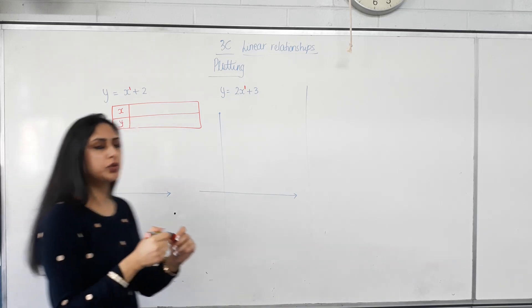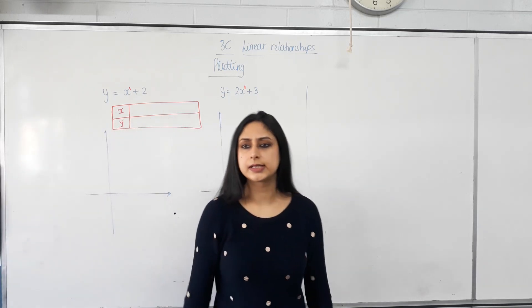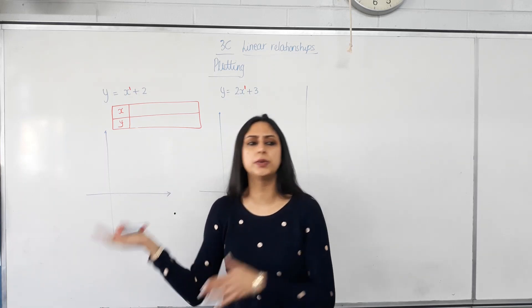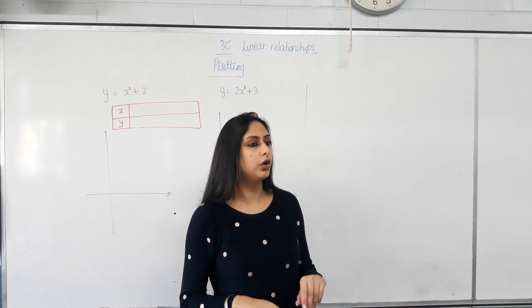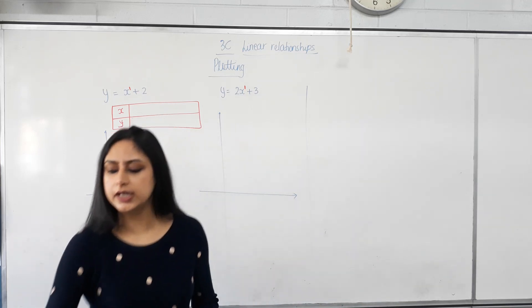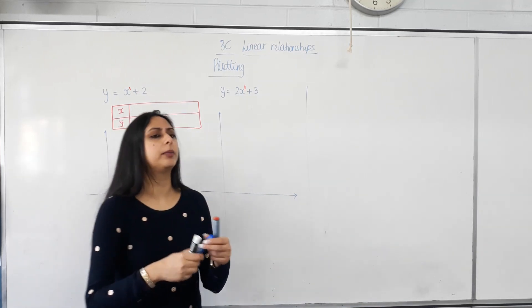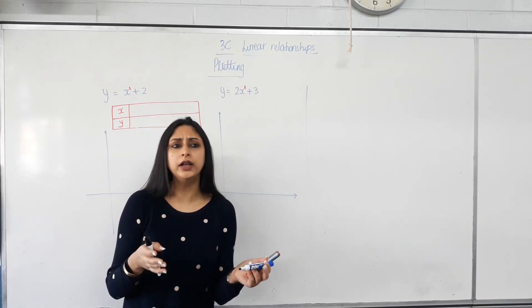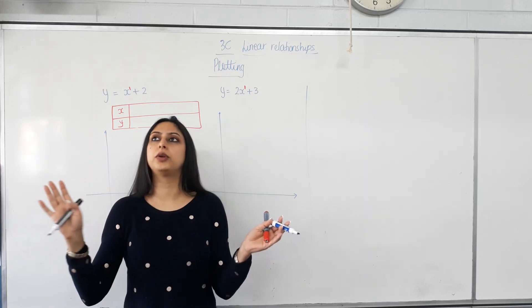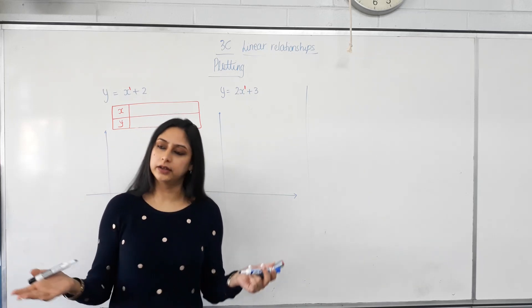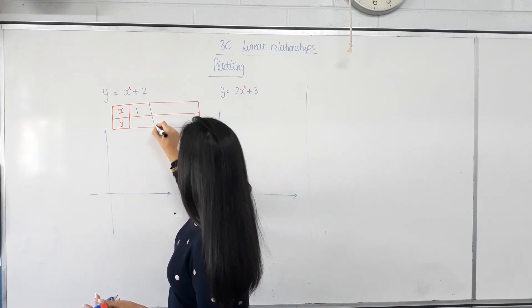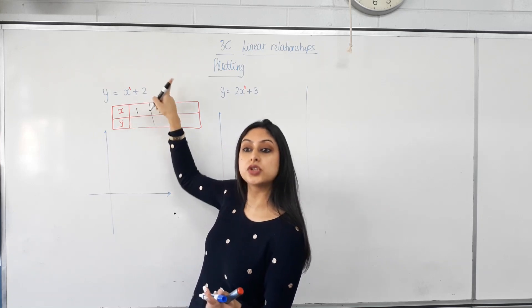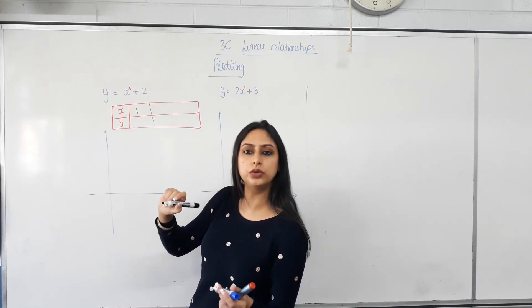Now can I choose whatever value I want for x? Yes, I can. Because have I given you any restrictions that x can't be this or x can't be that? No. So what is the simplest possible number that you want to put? Now again you want to make your life easier. If you can choose any number would you choose 1 or rather choose 123.56? 1. Sensible. So let's say x is 1. So if x is 1, what is y equal to? Whatever x is plus 2. So what's 1 plus 2? 3.